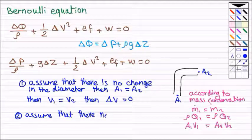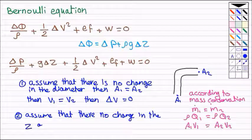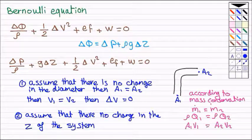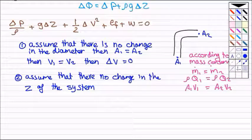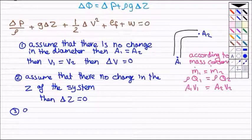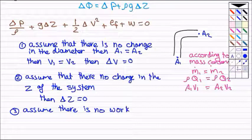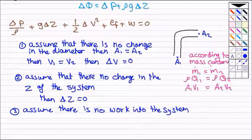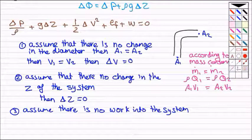We'll assume that also there is no change in the elevation of the two points, so delta z will equal to zero and can be cancelled from Bernoulli equation. Also we'll assume that there is no work into the system, so w will be zero and will be cancelled out.